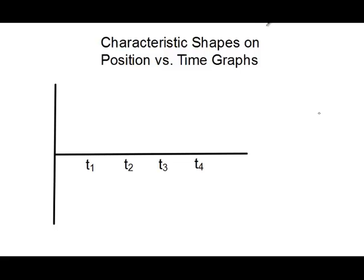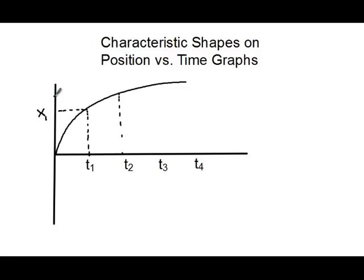Now let's look at another curved shape. This time I like to call it the humpback shape — it looks like the back of a whale, or like Quasimodo. Looking at this, we have time one here. It's curved again, so we know that it is going to be a non-constant velocity. That means the object is speeding up or slowing down.